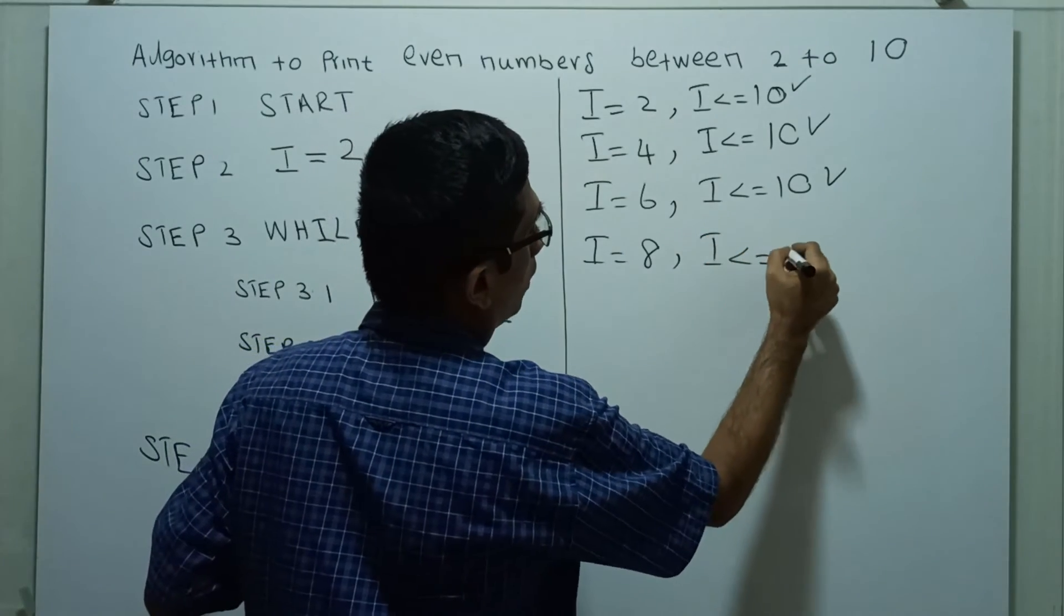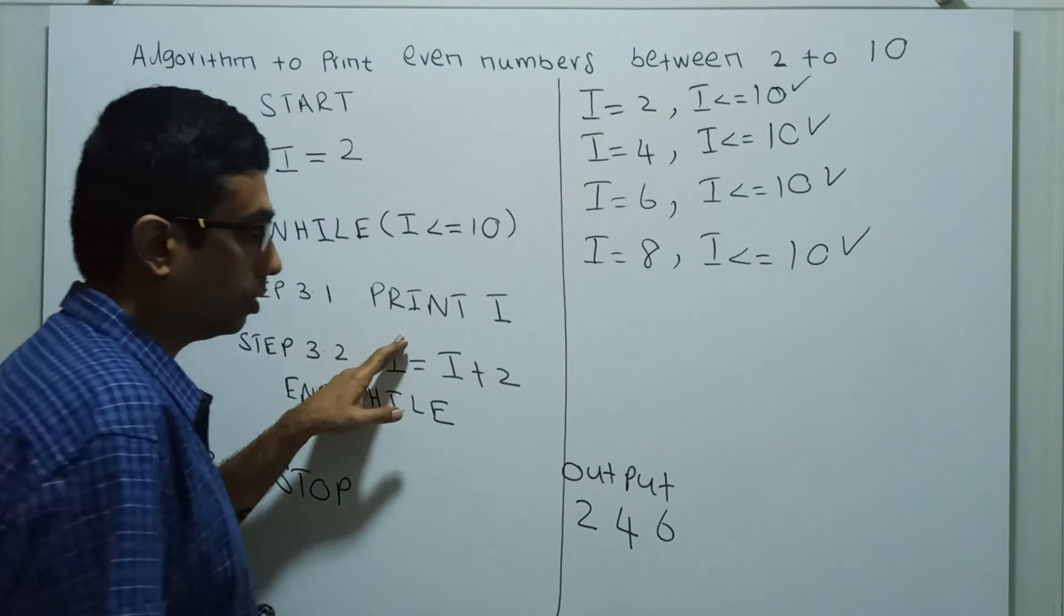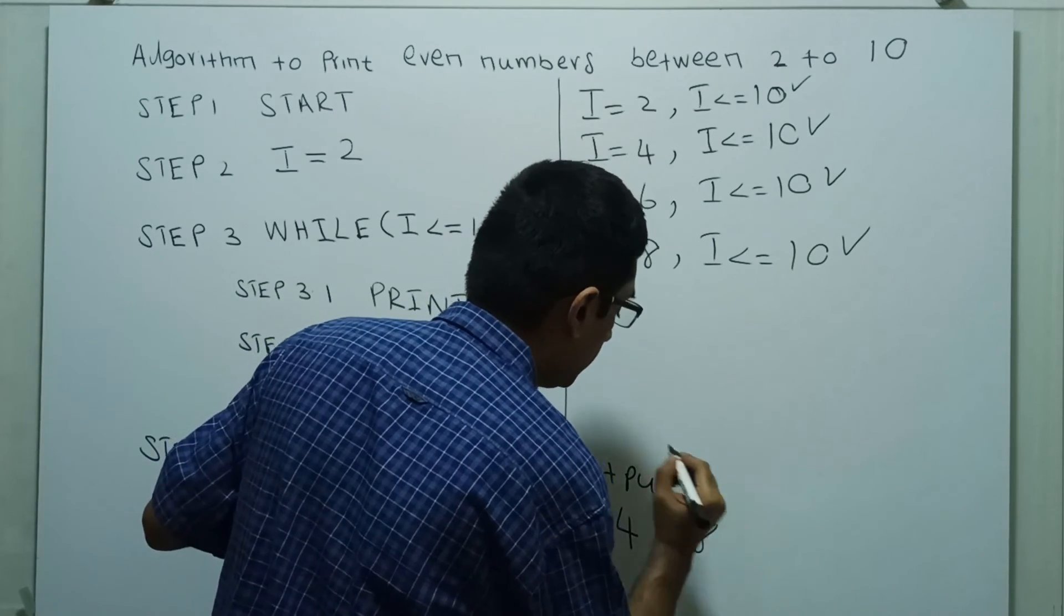I less than or equal to 10 which is true because 8 less than 10. So print I. So 8 will get printed.